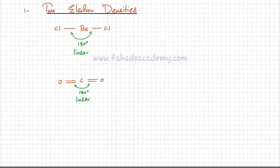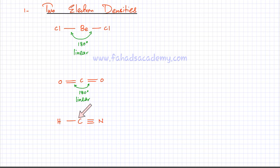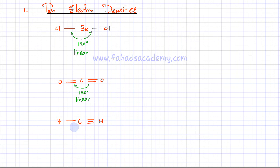One more example: HCN, where hydrogen makes a single bond with carbon, and carbon makes a triple bond with nitrogen. The triple bond counts as one electron density. The triple bond repels the single bond, pushing them to opposite sides of carbon. Again, the bond angles are 180° and the shape is linear.